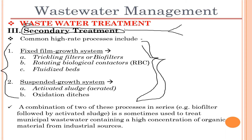There are two basic systems. The first is the fixed film growth system and the other is the suspended growth system. Under fixed film growth systems we have trickling filters or biofilters, rotating biological contactors, and fluidized beds. Under suspended growth systems we have activated sludge and oxidation ditches. I'll be discussing all of these systems in detail.